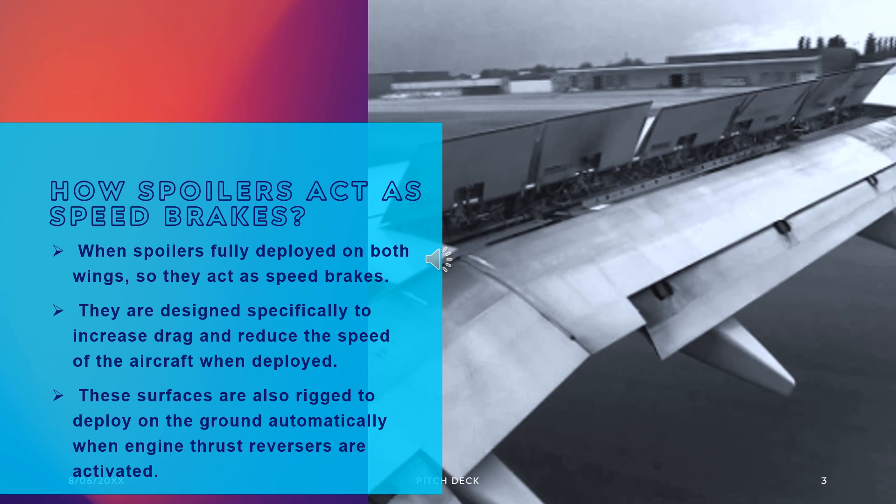Dedicated speed brake panels, similar to flight spoilers in construction, can also be found on the upper surface of the wings of heavy and high-performance aircraft. They are designed specifically to increase drag and reduce the speed of the aircraft when deployed. The speed brake panels do not operate differentially with the ailerons.